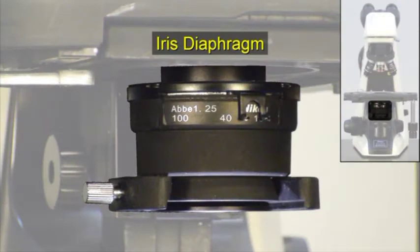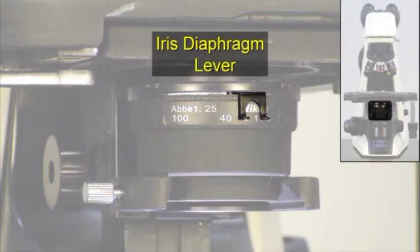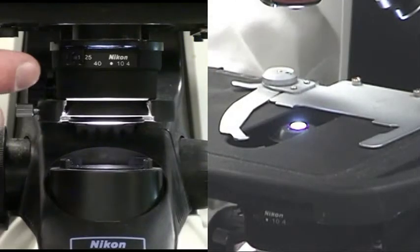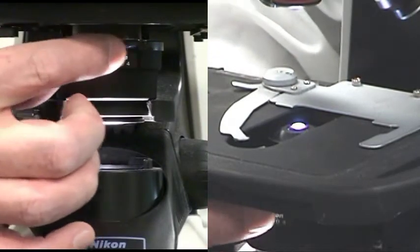The iris diaphragm is the large structure attached to the underside of the stage. It controls the amount of light that passes through the slide. Moving the lever opens and closes the internal iris aperture to change the amount of light that passes. This is your primary light adjustment, which also changes image contrast.